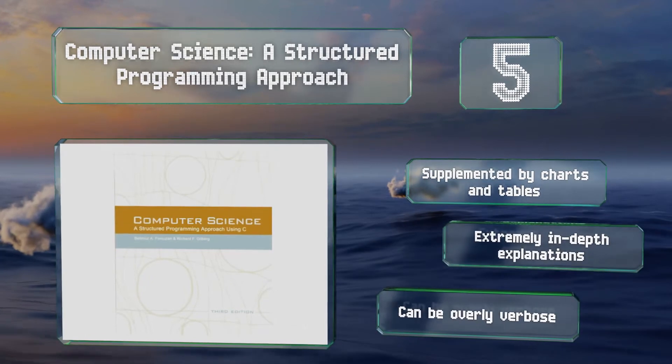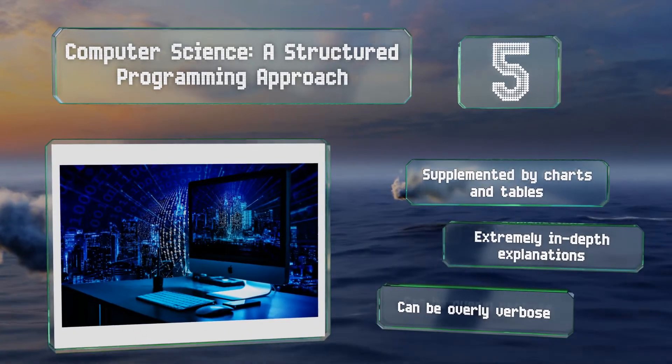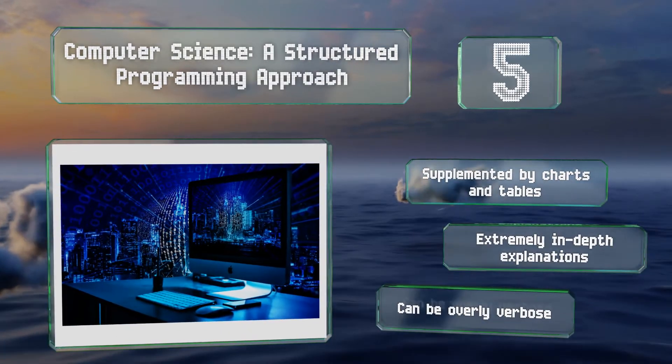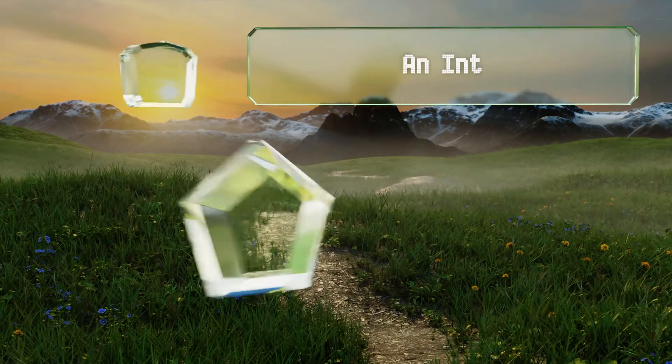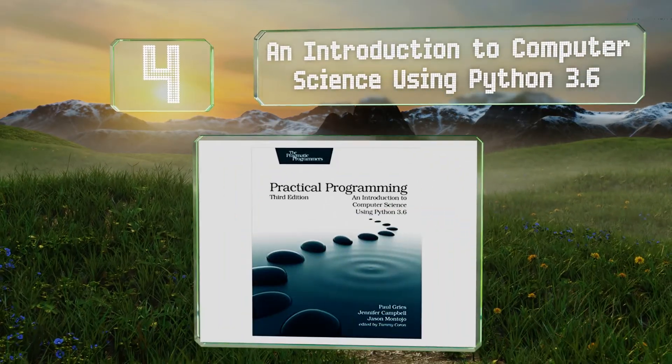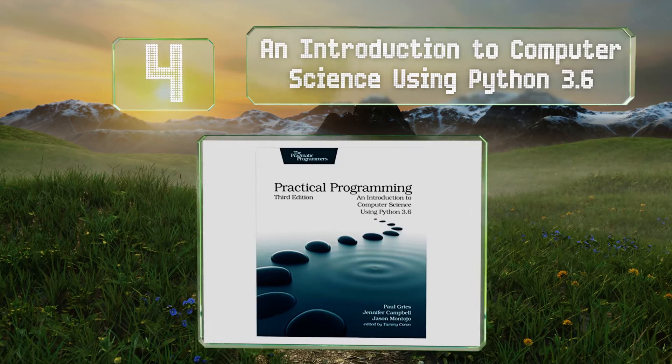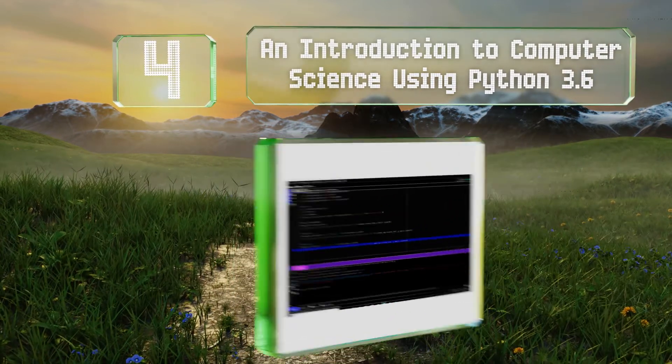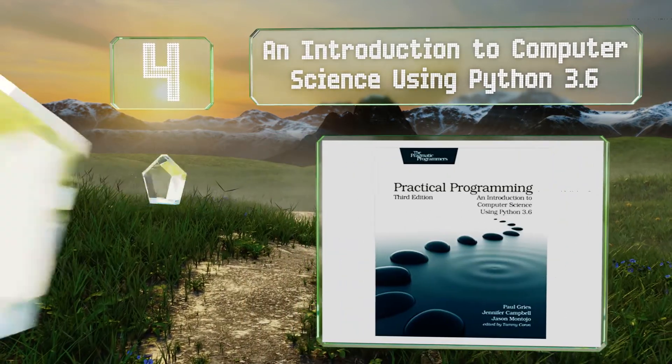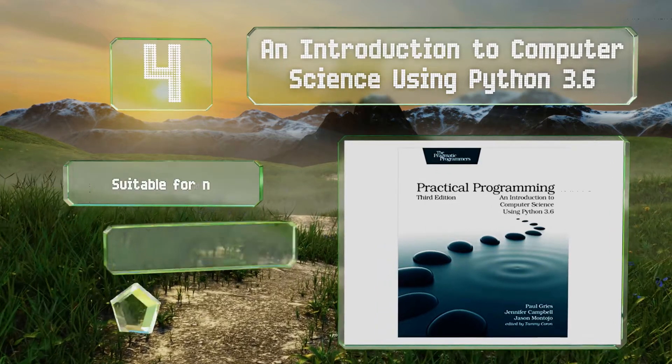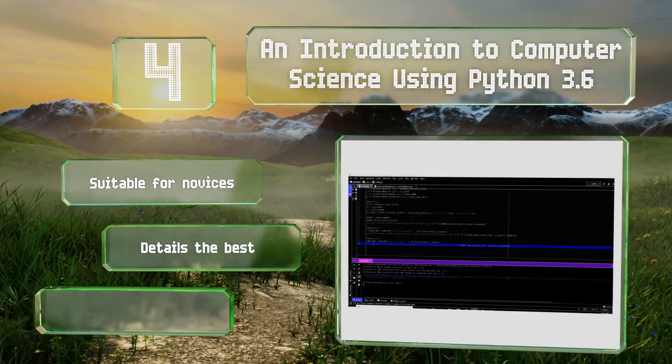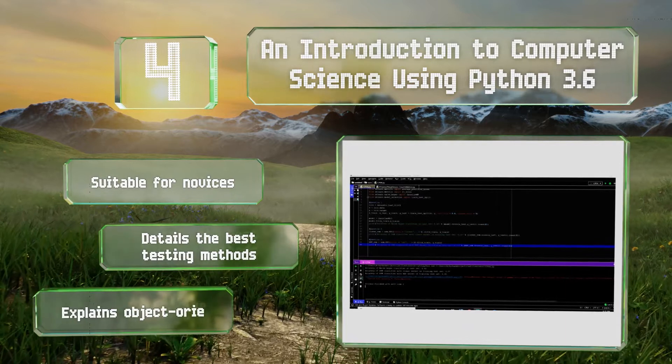At number 4, An Introduction to Computer Science Using Python 3.6 won't just teach you code-specific information, though you will certainly get a lot of that. It also touches on a range of other issues all programmers need to know, such as how and why to document your work. This one's suitable for novices and details the best testing methods and explains object-oriented concepts.